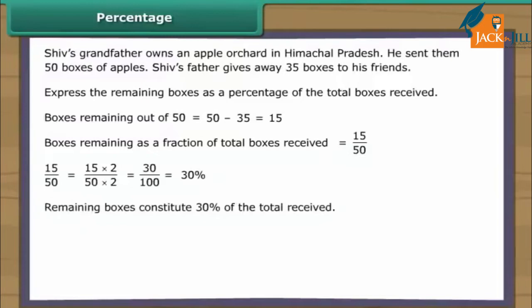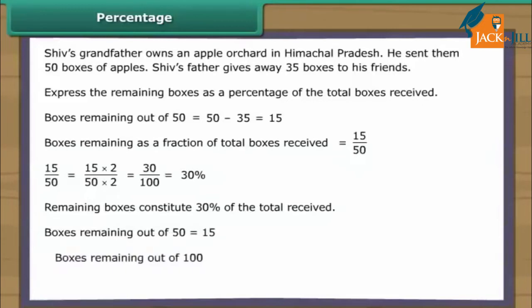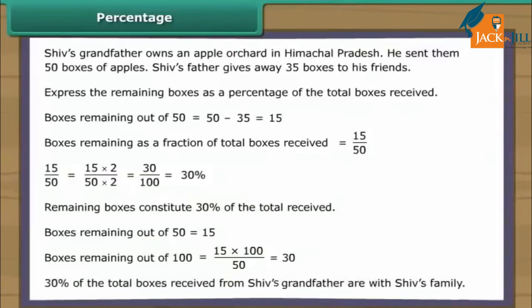Let us attempt the same question with the help of the unitary method. Boxes remaining out of 50 is equal to 15. Boxes remaining out of 100 is equal to 15/50 into 100, which equals 30. Therefore, 30% of the total boxes received from Shiv's grandfather are with Shiv's family. Both methods yield the same answer.